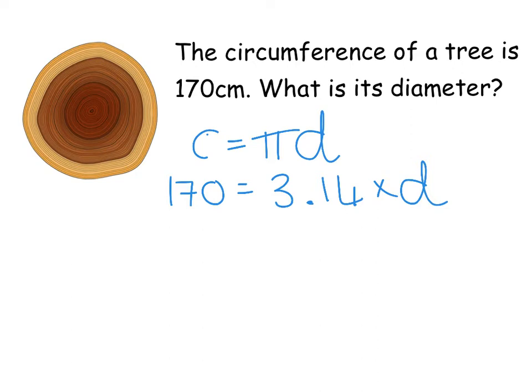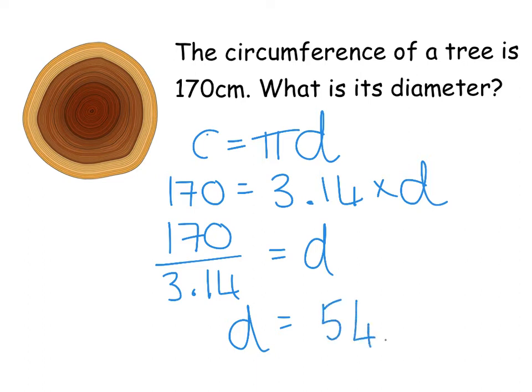Now in maths it's all about changing the subject and doing the opposites. If I want to know what D is, the thing that's stopping me is this multiplied by 3.14. So the opposite of multiplying by 3.14 is to divide by 3.14. So I would do 170 divided by 3.14 and that would give me my diameter. That gives us 54.14 centimeters. So that is the diameter of that tree.